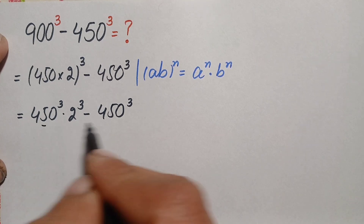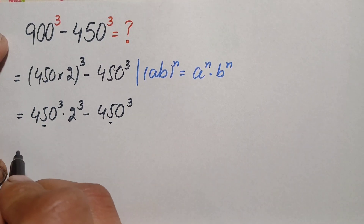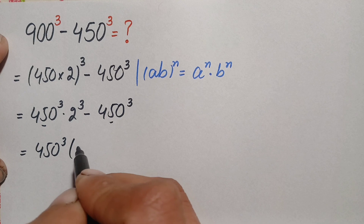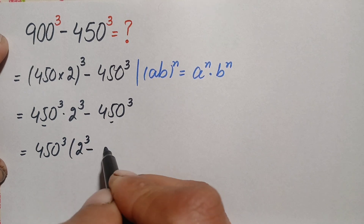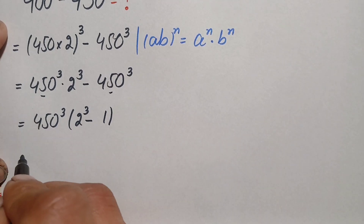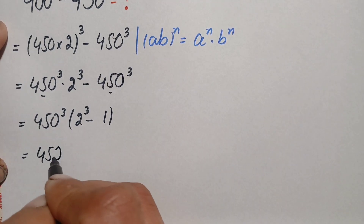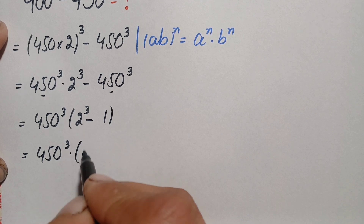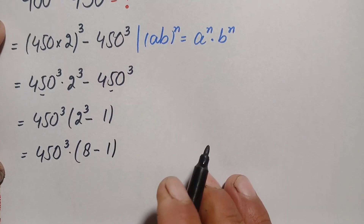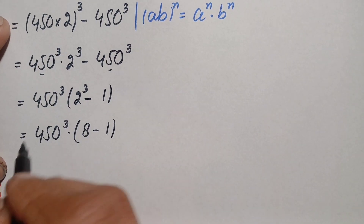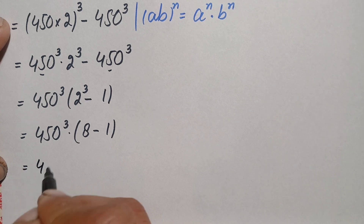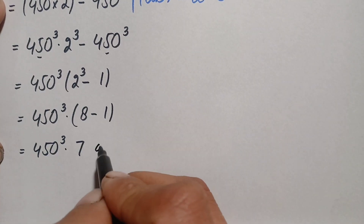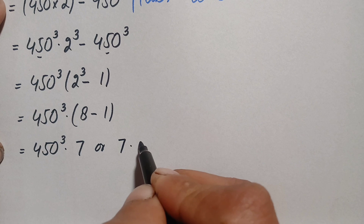Using this identity, this number becomes (450)³ times 2³ minus (450)³. Now in both terms, 450³ is common, so we take it out. This becomes 450³ times (2³ minus 1). 2³ is 8, and 8 minus 1 is 7, so this becomes 450³ times 7, or 7 times 450³.